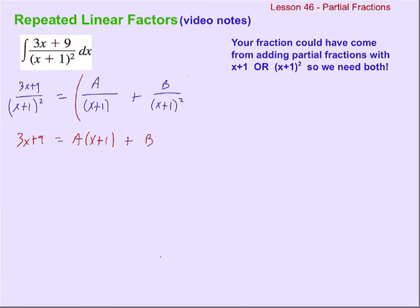Just to be clear: a reminder from algebra two — what we're doing to get the denominators cleared is multiplying both sides by x plus one squared. On the left-hand side, that completely cancels. On the right-hand side, when we distribute the x plus one squared to the first term, only one of the x plus ones canceled. When we distribute it to the second term, both x plus ones canceled. So now we need to figure out what our A and our B are equal to.